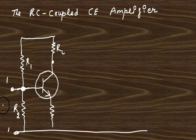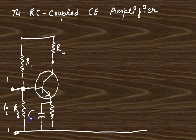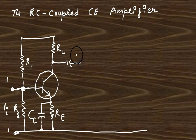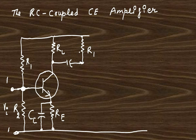Input signal is sent through port 1-1 via VA. There is a bypass capacitor CE across RE. Here is a blocking capacitor which is attached at the collector of Q1.